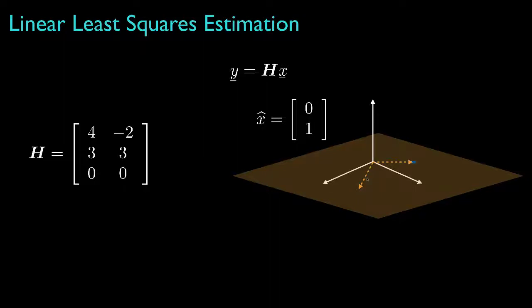Likewise, if the observation is as shown here, we'd estimate the parameter vector as 0, 1. And if the observation is here, we'd estimate the parameter vector as 1, 1: 1 unit of the first column, 1 unit of the second column. Now provided the observation is somewhere in the range for the matrix H, we can find an estimate for the parameter vector that perfectly predicts or perfectly matches the observation.